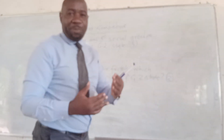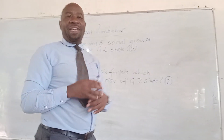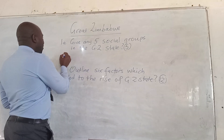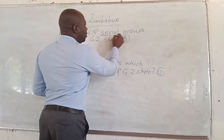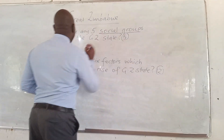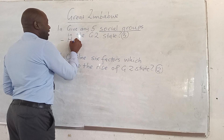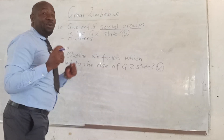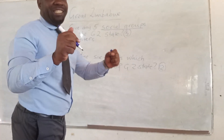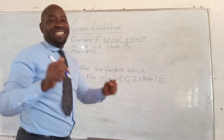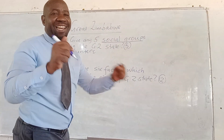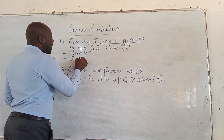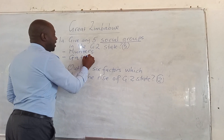What were the social groups that were in the Great Zimbabwe state? So we had a social group which was called the Hunters — those that were good at hunting. They were known as the Hunters.